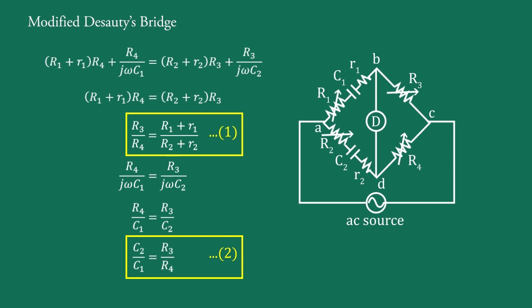The bridge is balanced by adjustment of R1, R2, R3, and R4. These balance conditions may not be satisfied independently. The resistances R3 and R4 are variable, and R1 and R2 are the adjustable resistances used to bring the potential difference between points A and B into phase.